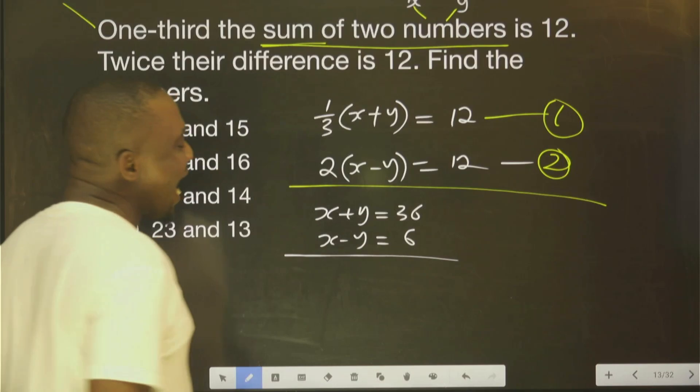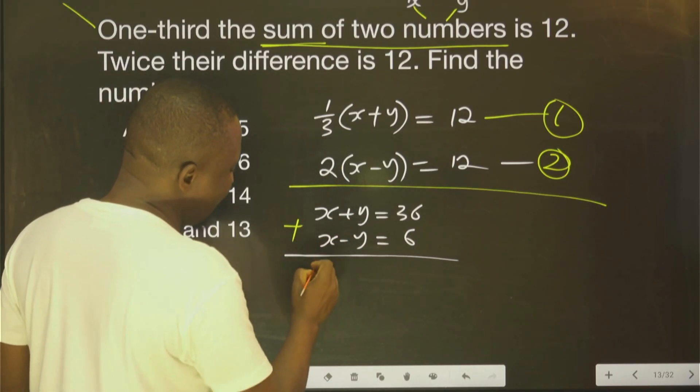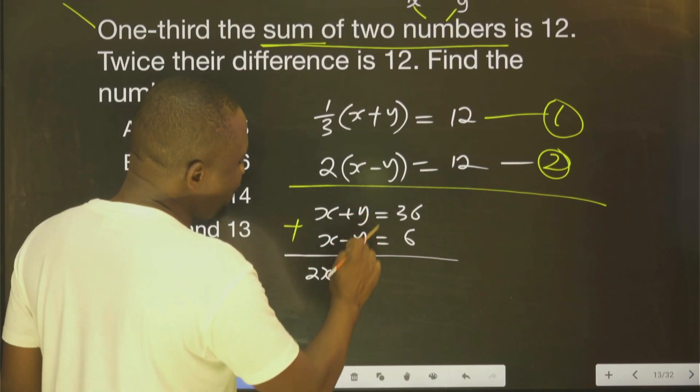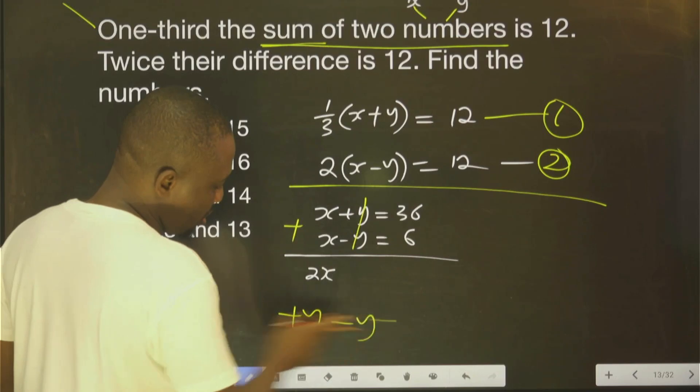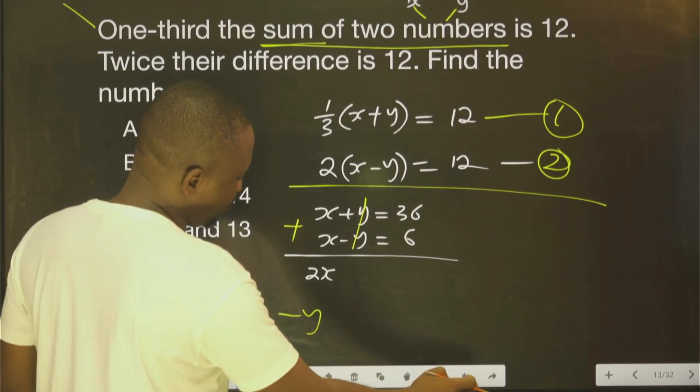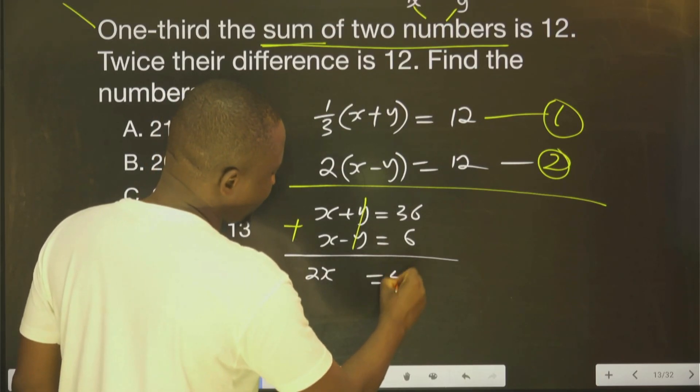You can use elimination method by adding this. These two you add, you have 2S. If you add these two, they will cancel themselves. So that is 0. Equals to, if you add this now, you're going to have 42.